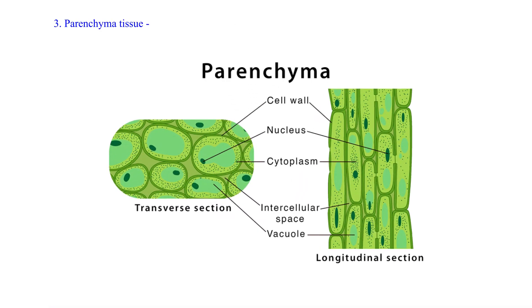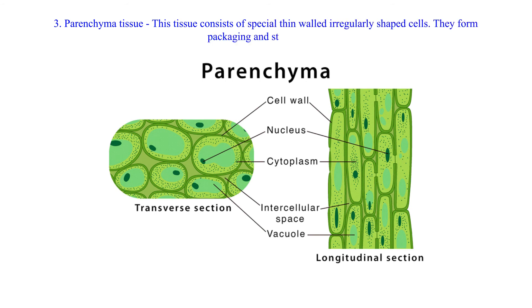3. Parenchyma Tissue: This tissue consists of special thin-walled irregularly shaped cells. They form packaging and storage cells.